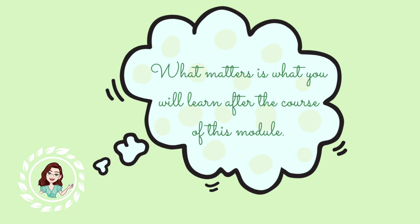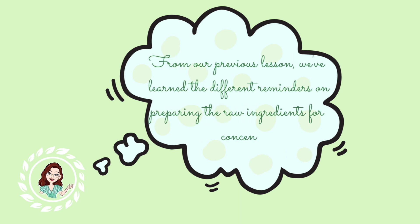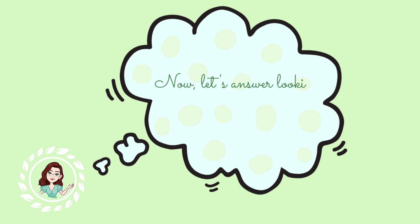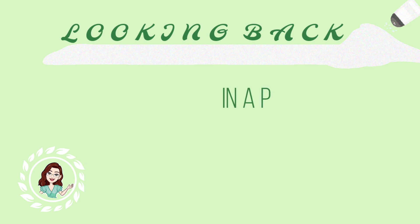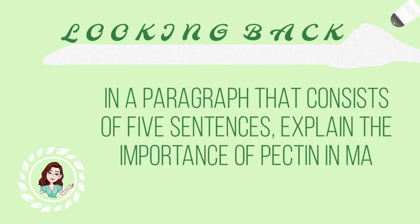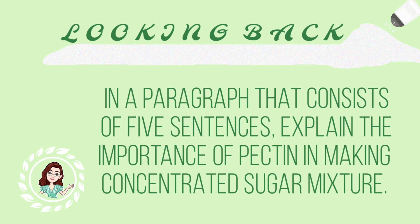Your score in the pre-test will not be recorded because this is only a pre-assessment. What matters is what you will learn after the course of this module. From our previous lesson, we learned the different reminders on preparing the raw ingredients for a concentrated sugar mixture. Now, let's answer looking back on your answer sheet. In a paragraph that consists of five sentences, explain the importance of pectin in making a concentrated sugar mixture.